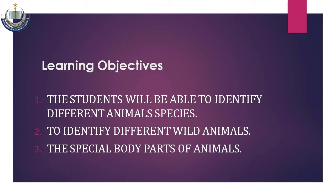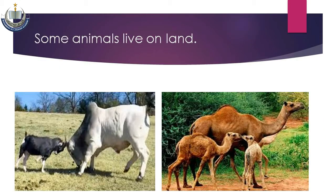ہماری زمین پر مختلف اقسام کے animals پائے جاتے ہیں جو مختلف جگہوں پر اور مختلف طریقوں سے زندگی گزارتے ہیں۔ کچھ animals خشکی پر رہتے ہیں جیسے کہ cow، sheep، lion وغیرہ۔